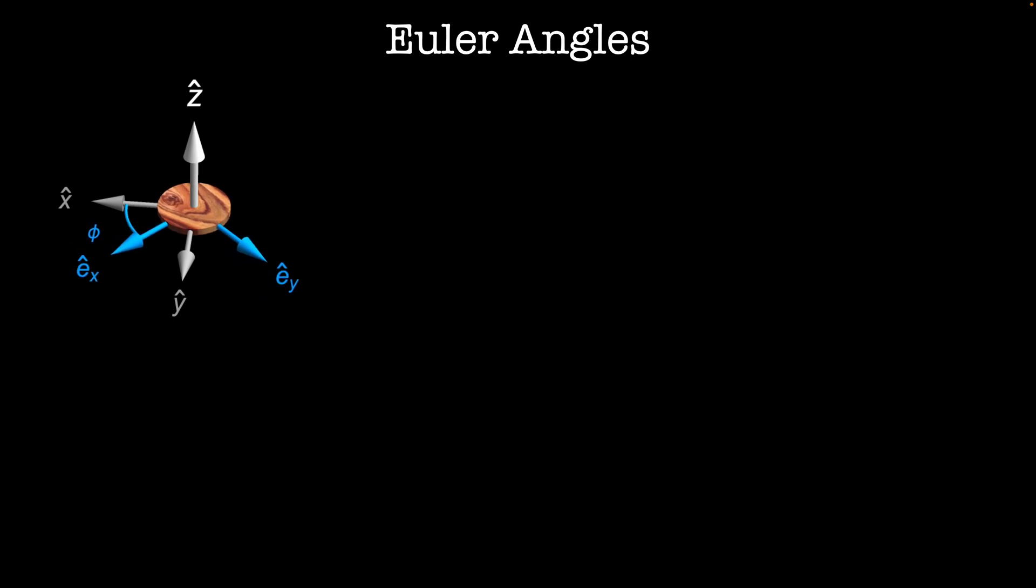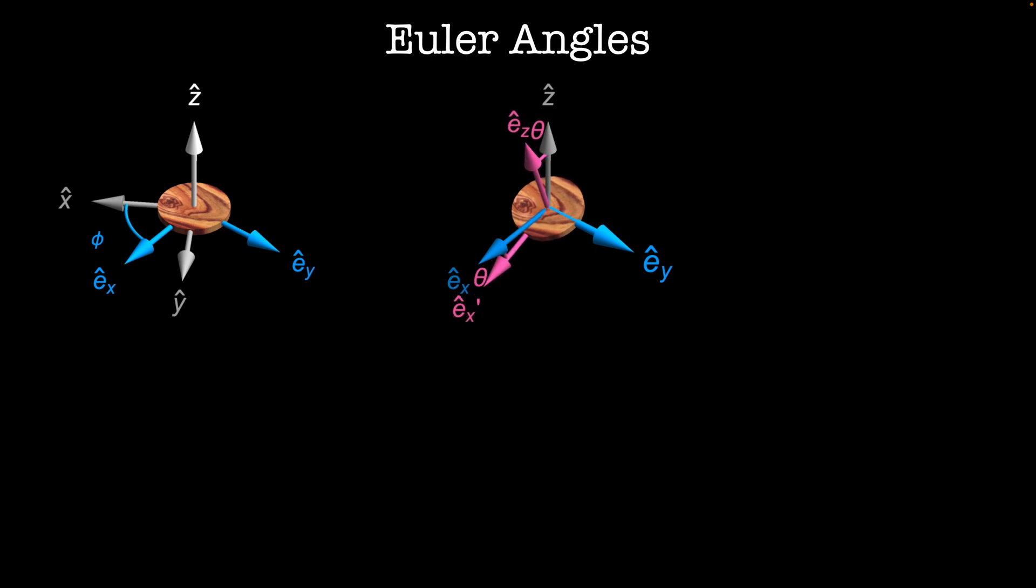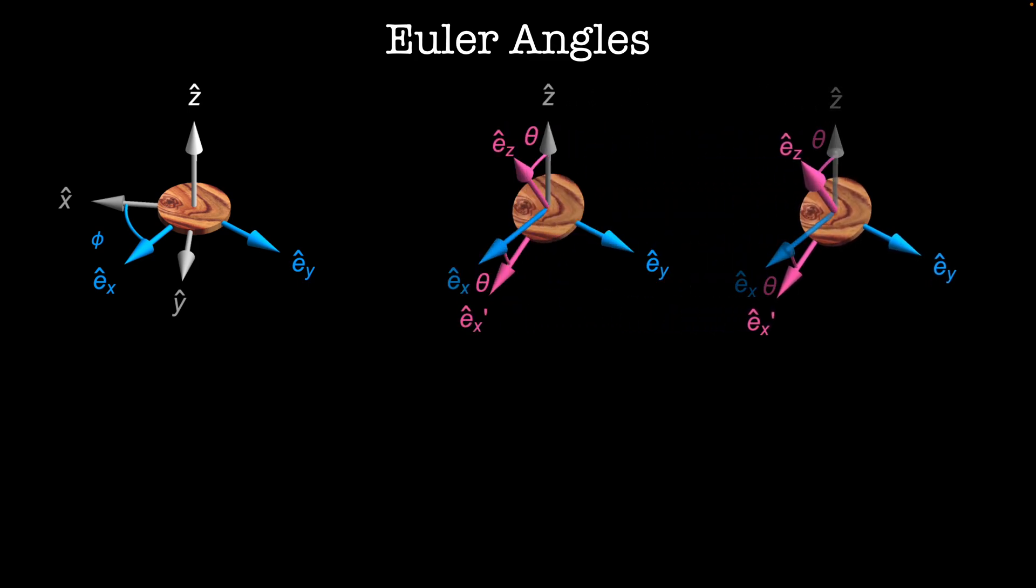That gives us the new axes EX and EY in the body frame. Then we'll rotate the body around the new EY axis by angle theta. The z-axis now becomes EZ and the EX axis is now EX'. Lastly, we'll rotate about the new EZ axis by some angle psi.